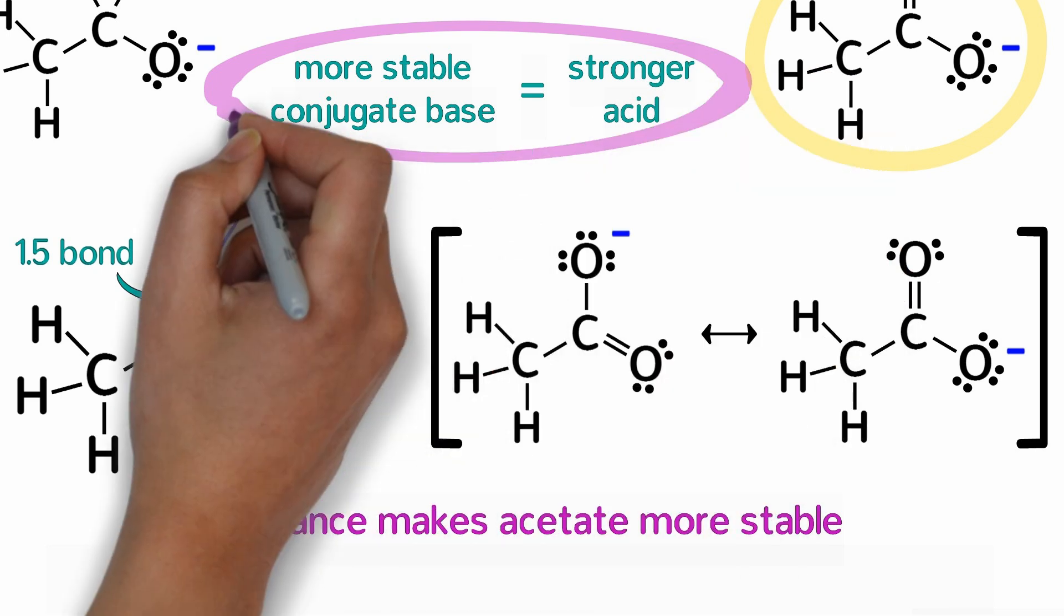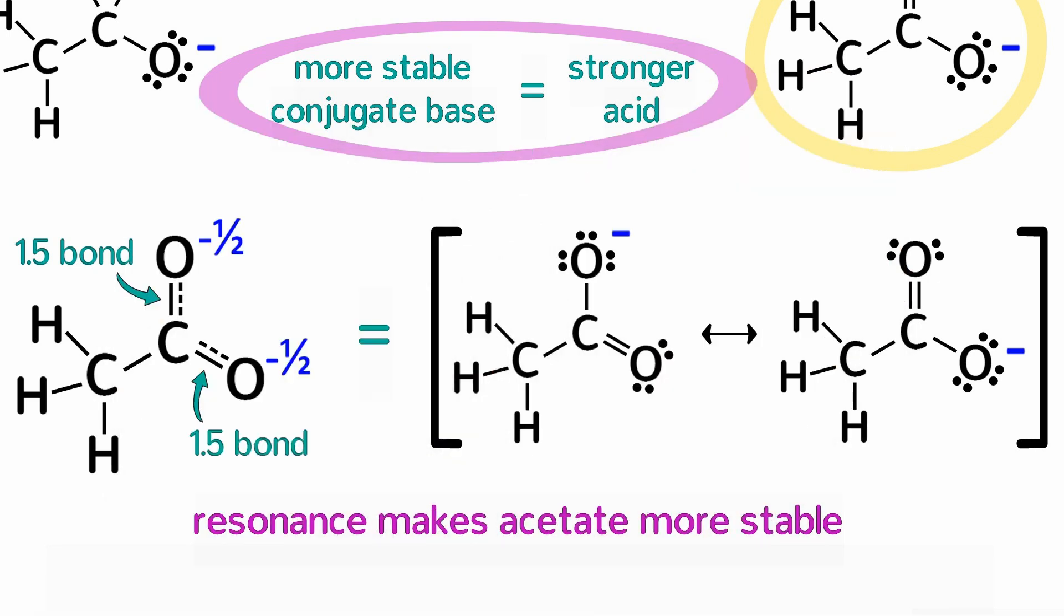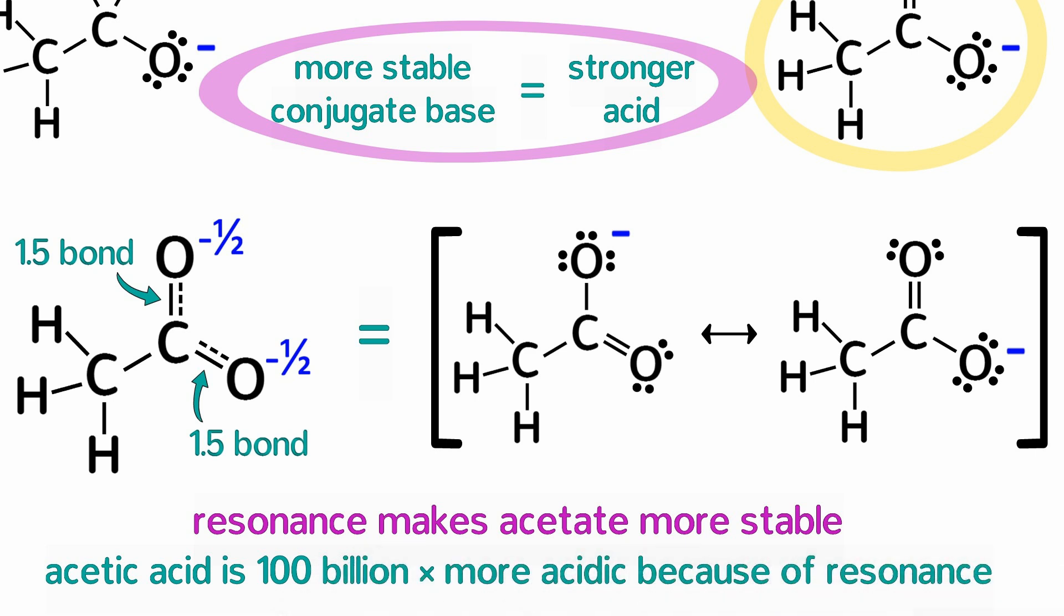A more stable conjugate base means that acetic acid is a stronger acid than ethanol. In fact, acetic acid is about 100 billion times more acidic than ethanol, and that is mostly because of its resonance.